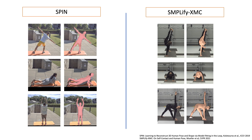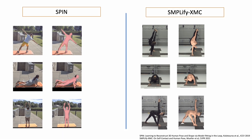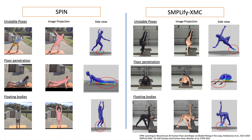Existing 3D human pose and shape estimation methods produce 3D humans that align well with image features in the camera view. Unfortunately, the camera view can be deceiving. When viewed from other directions, or when placed in a 3D scene, the estimated bodies are often physically implausible — leaning, hovering, or penetrating the ground plane. This is because most state-of-the-art methods reason about humans in isolation, ignoring the ground plane and the support afforded by it.